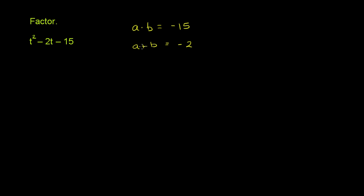Once we have these two numbers, I can show you how we can use those to factor by grouping. In other videos, I've actually broken down why this technique works. Now let's think of the different factors of negative 15 — when we take their product and their sum, if we can somehow get to negative 2.